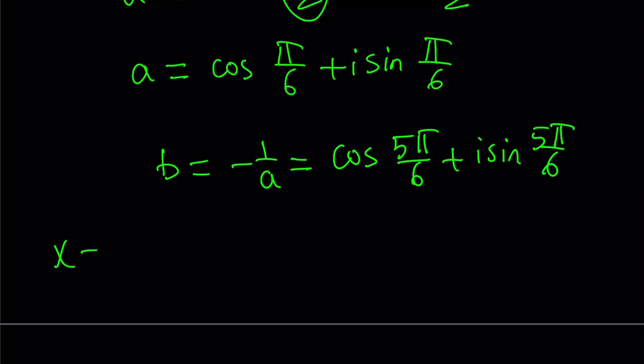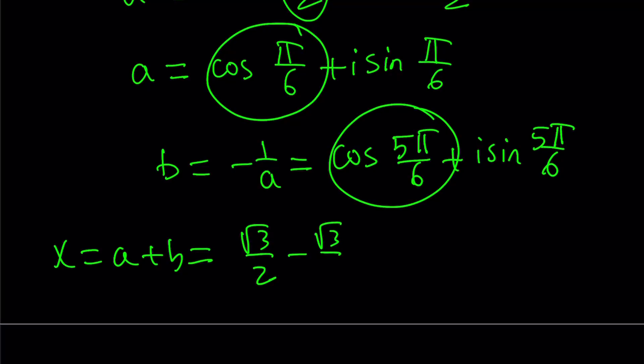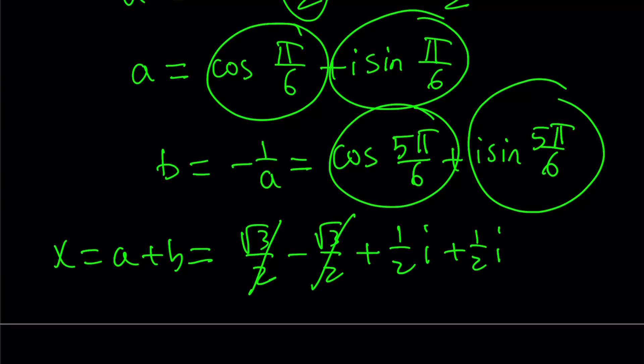Now x is going to be a plus b. If you add these values, you're going to get the following. This is going to be square root of 3 over 2, minus the square root of 3 over 2. And now you're going to add these two values. That's like one half of i, and this is also going to be one half of i. Remember, sine is positive in first and second quadrants, but cosine is negative in the second quadrant. So they cancel out. And we end up with x equals i.